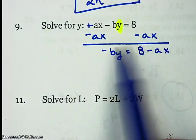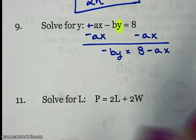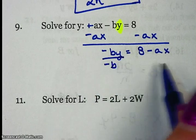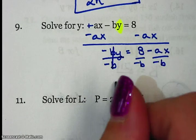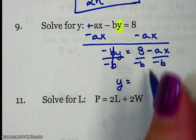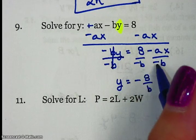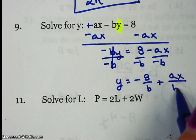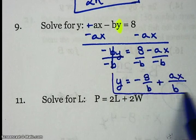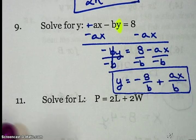Now it doesn't matter if you put negative AX first or the 8, your choice. Then we're going to divide by negative B. Now here's where we have to be careful because of signs. Y equals, well that's just negative 8 over B. But a negative divided by a negative is a positive. So AX over B, and I'm done. Be very careful of double negatives.